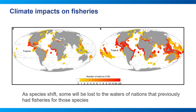Climate change and shifting distributions are also creating management and political challenges, since many traditional ways of managing fisheries are based on historical dynamics that may no longer hold, or static boundaries that fish don't honor. As species shift across national borders, some will be completely lost to nations that previously had fisheries for those species. This raises issues of climate justice, because tropical nations that tend to be most dependent on fish for nutrition and livelihoods — and have contributed the least to greenhouse gas emissions — are projected to lose the most fish resources. Distribution shifts have already sparked international conflict over fishing rights, and more conflict will likely occur without more adaptive transboundary management.